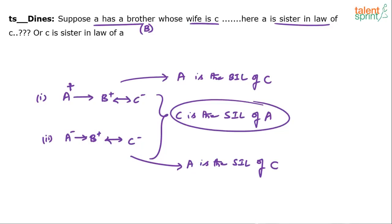So it is possible that in Case 2, both A and C are sisters-in-law to each other — A is the sister-in-law of C, and C is the sister-in-law of A. In Case 1, A is the brother-in-law of C, whereas C is the sister-in-law of A. That's the clarity you need.